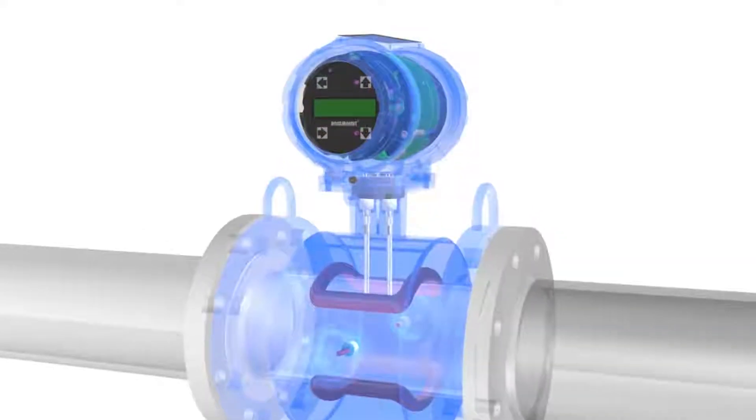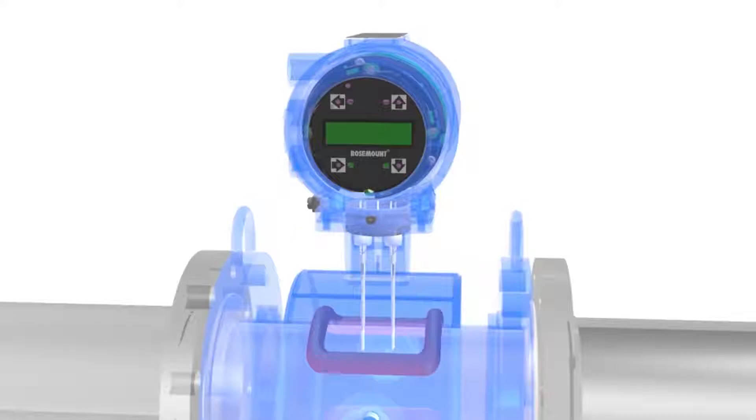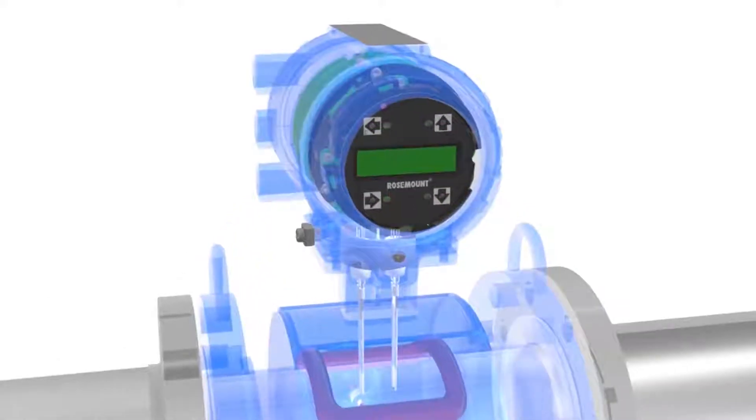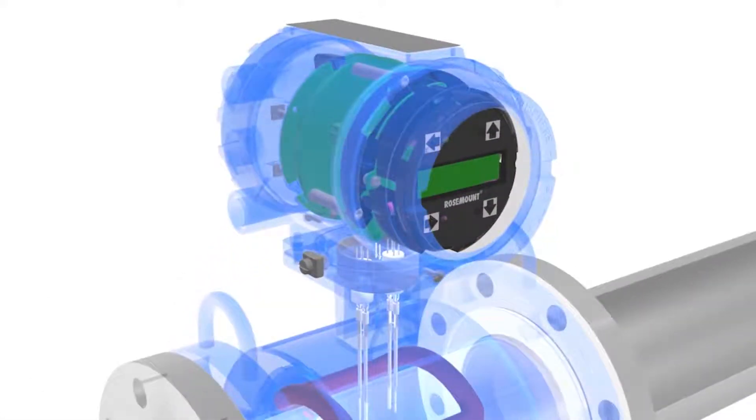The transmitter takes the measured voltage generated by the sensor, converts the voltage into a flow measurement, and transmits that flow measurement to a control system.